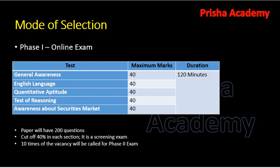For the mode of selection, Phase 1 is an online exam conducted in a single shift of two hours duration. It consists of five sections: General Awareness, English Language, Quantitative Aptitude, Test of Reasoning, and Awareness about Securities Market. Each section consists of 40 questions worth 40 marks, for a total of 200 marks.